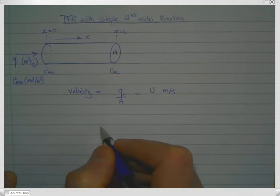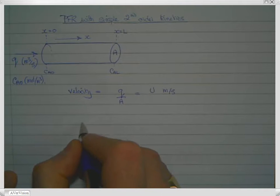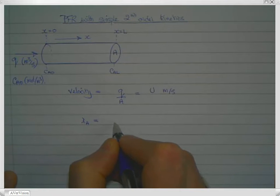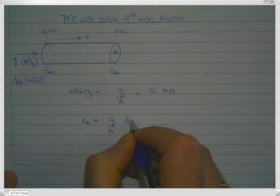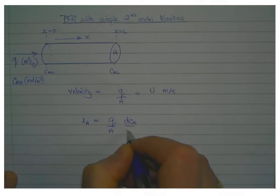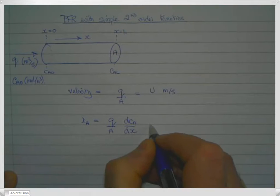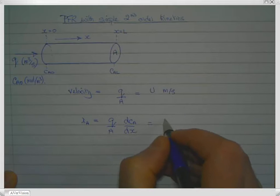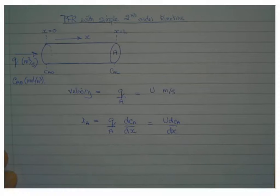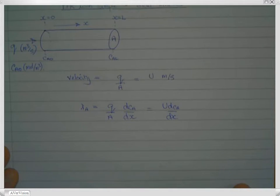Now the generalized equation to describe the PFR was derived earlier, and that was RA equals Q over A dCa by dx, which can be written with the velocity term as U times dCa by dx.